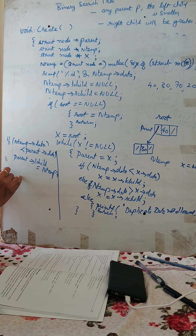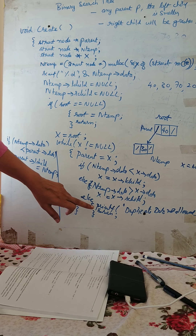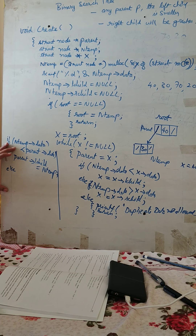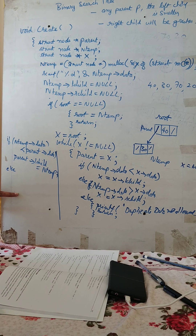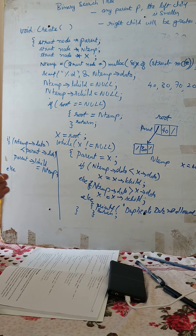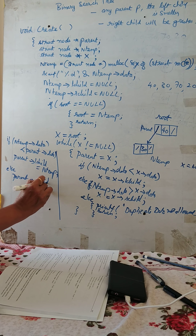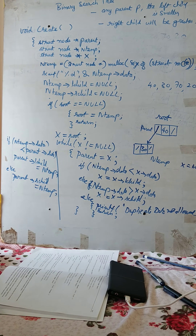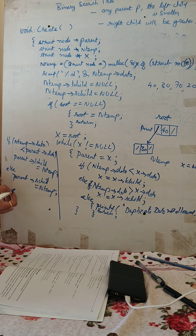In the else case — when ntemp->data is not smaller than parent->data — the new node must be greater than the parent, so it should be attached as a right child: parent->rchild = ntemp. Note that the duplicate case is already handled by returning early, so only two cases reach this point: attach as left child or attach as right child. This completes the create module.